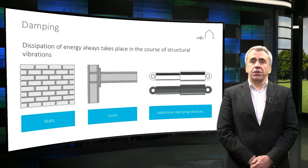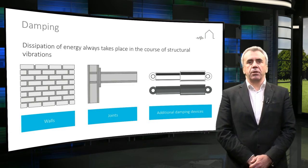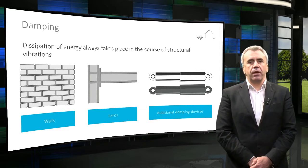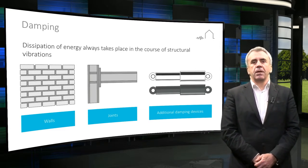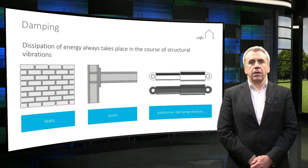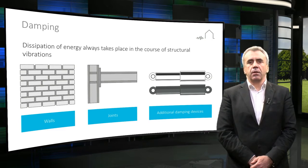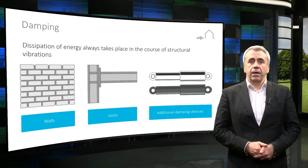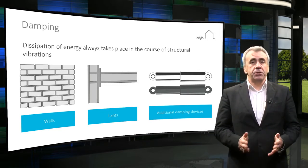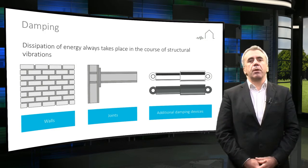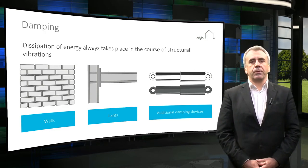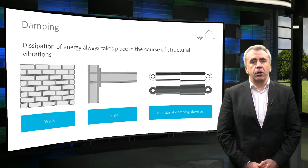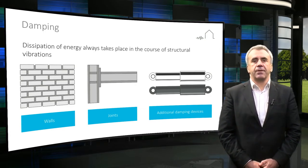The reason that the model discussed in the previous lecture predicts infinite amplification at resonance is that we did not account for energy dissipation that takes place during vibration. This dissipation can take place in the case of a building in walls, in joints, or in external dampening devices used deliberately to reduce structural vibrations as a response to earthquakes. The generic term for this energy dissipation is damping.